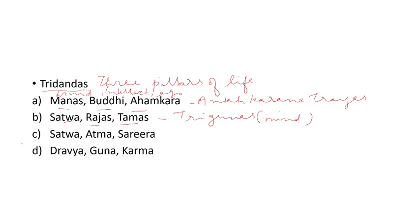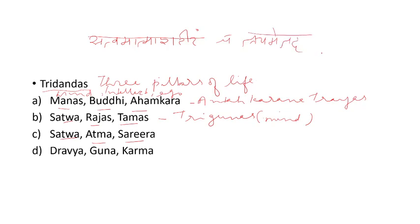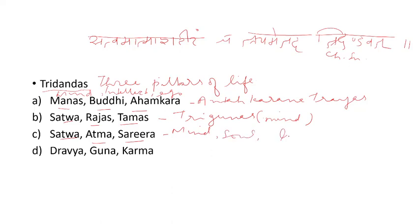The next option is Sattva, Atma, Sharira. From the sloka in Charaka Sutrasthana: 'Sattva Atma Shariram Cha Traya Metat Tridandam.' Sattva is mind, Atma is soul, and Sharira is body — mind, soul, and body. Sattva Rajas Tamas is also called mental personality — the mental personality is based on these three Gunas.